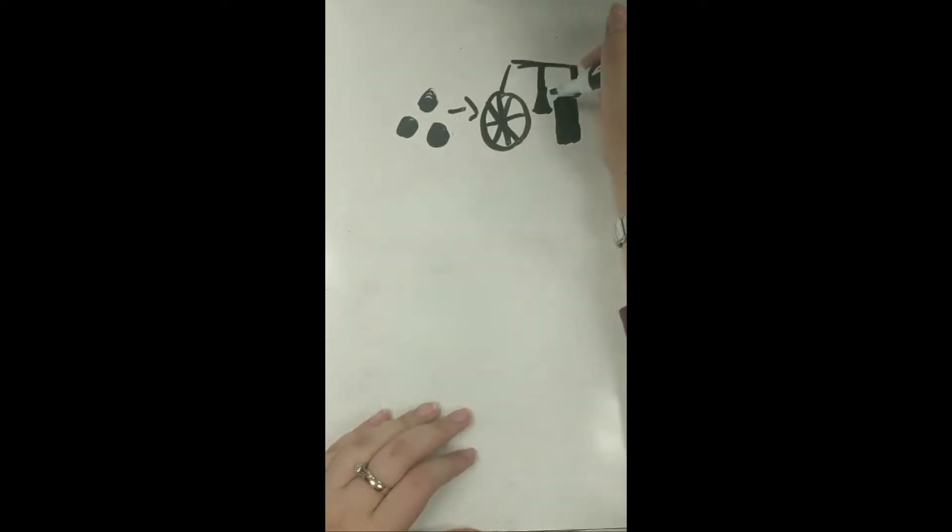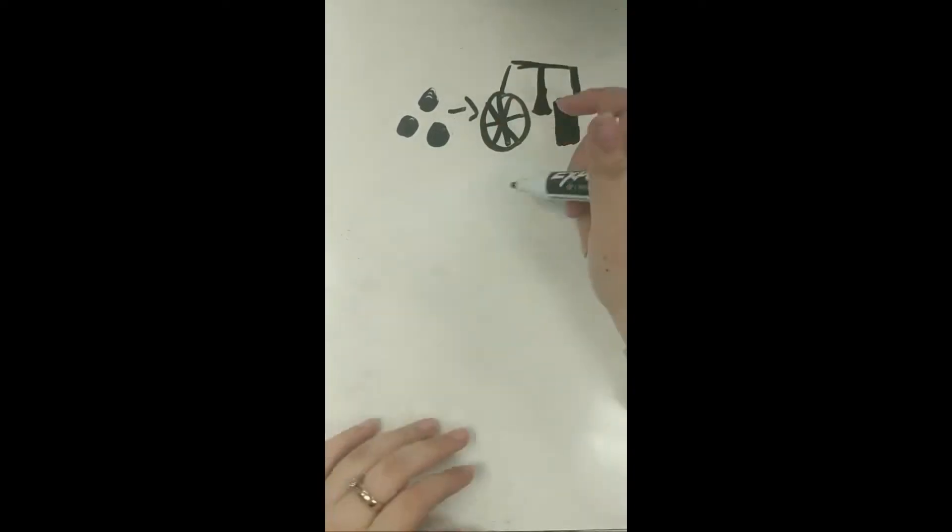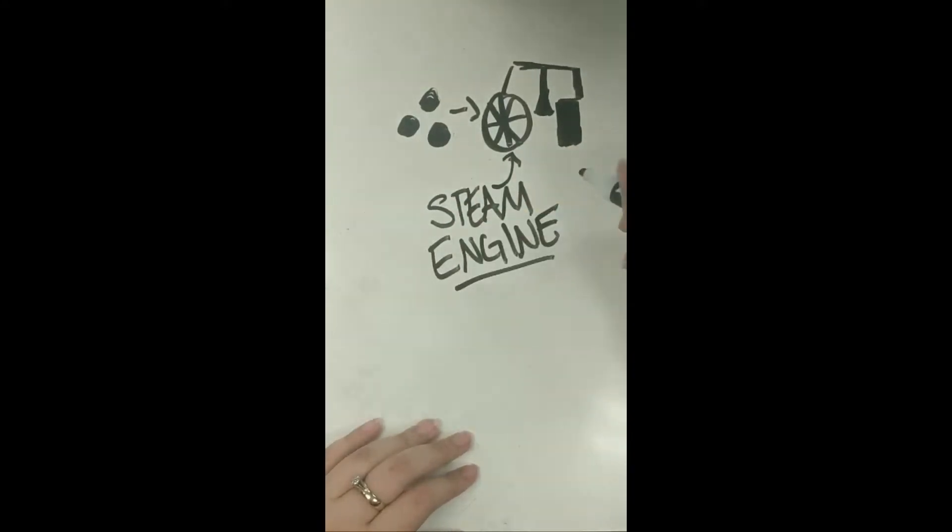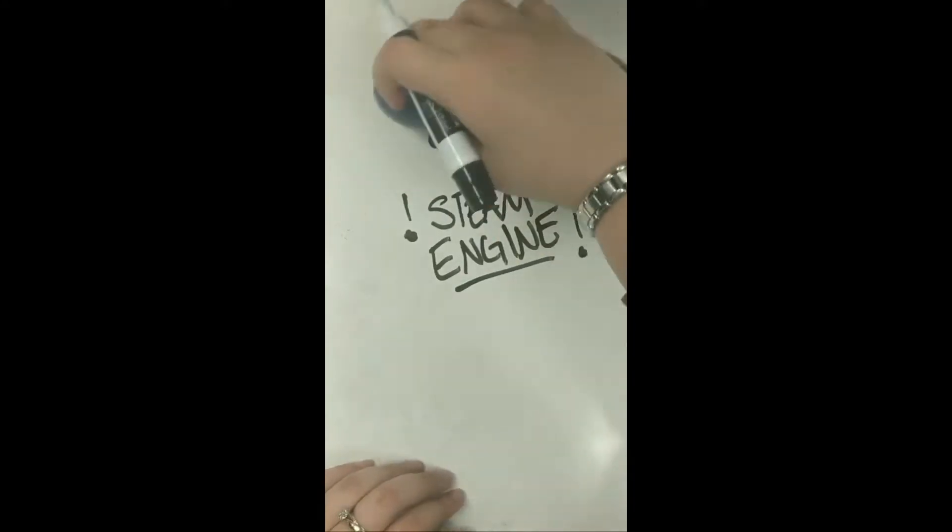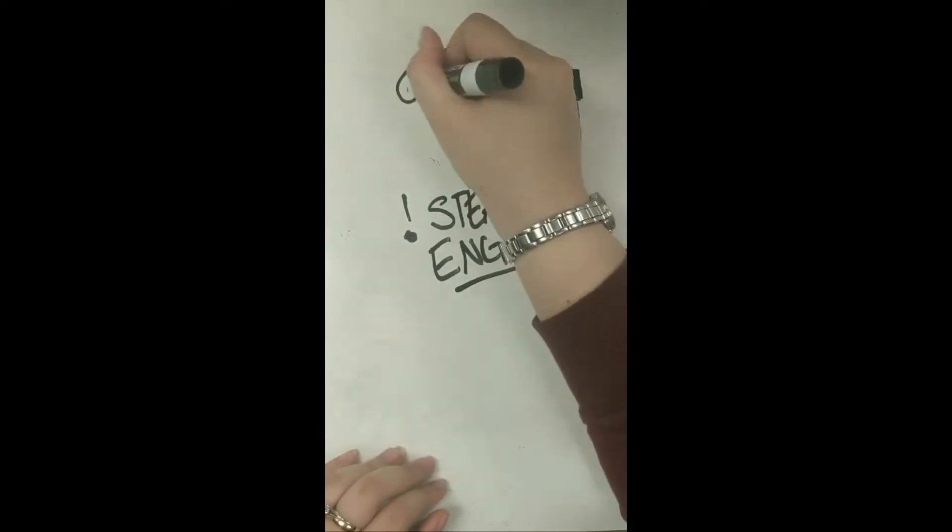The first primitive steam engines were invented by Thomas Savery and Thomas Newcomen, both burning coal to produce steam used to operate a pump.